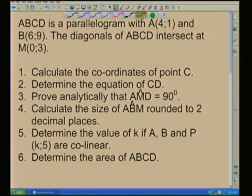ABCD is a parallelogram with A(4,1) and B(6,9). The diagonals of ABCD intersect at M(0,3). Question 1: Calculate the coordinates of point C. Now, what we're going to do is hand over to Jacques and ask him to see how we're going to get the answer to the solution.